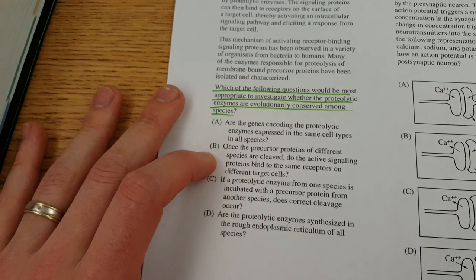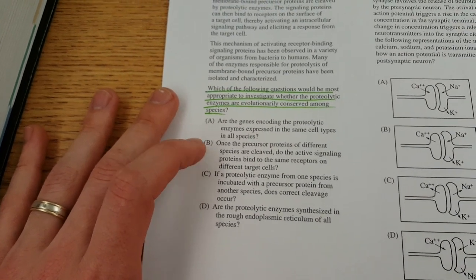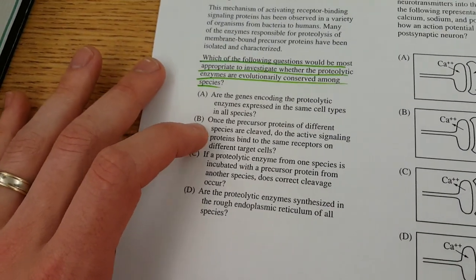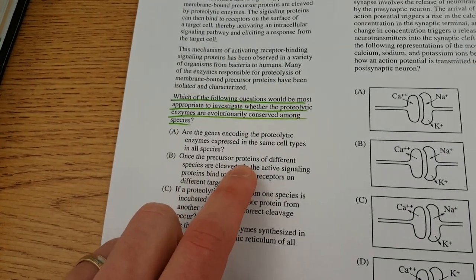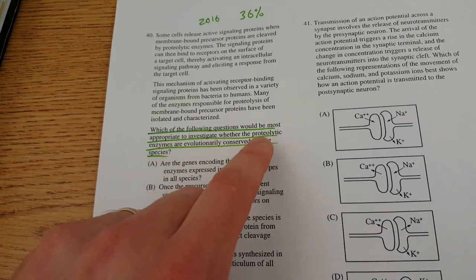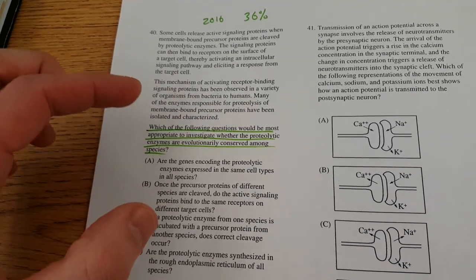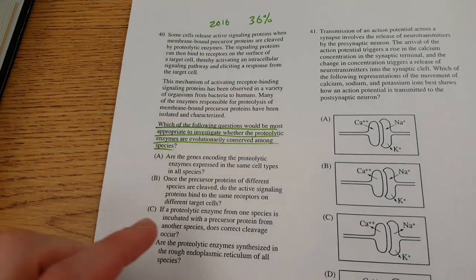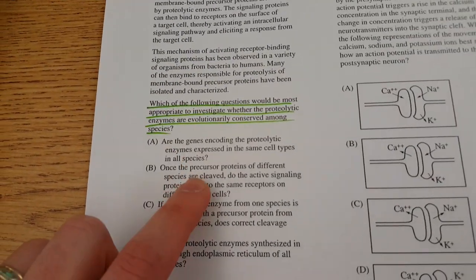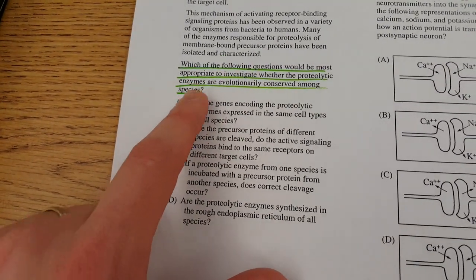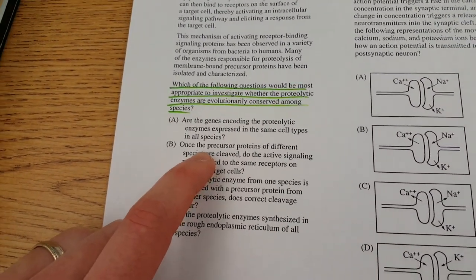Letter B says, once the precursor proteins of different species are cleaved, do the signaling proteins bind the same receptors on different target cells? Well, here they're talking about the precursor proteins, but up here they're talking about the proteolytic enzymes. And those are the two pieces that we're dealing with in this question. There's the enzyme, and then there's the products of that enzymatic reaction. B is talking about the products of that enzymatic reaction being conserved, not the enzyme being conserved. So we have to cross off B as a potential answer.